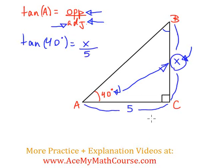Now we just want to solve for x, so to do that I will multiply both sides by 5. Then these cancel out, so I get x is equal to 5 times the tangent of 40 degrees.